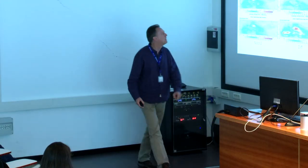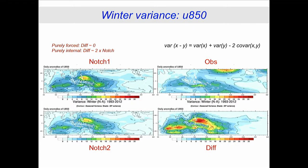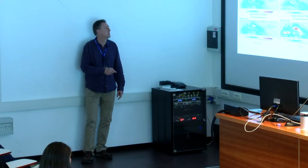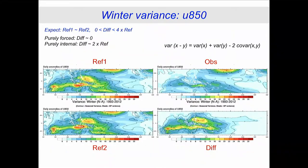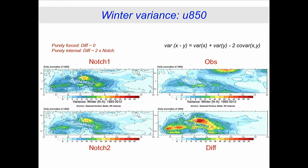The notch run has weaker variance than the reference run, implying some variance comes from boundary conditions on MJO timescales, because that's what's been removed in the notch runs. The difference between the notch twin runs is closer to twice the variance — implying the remaining variability is basically internal variability once the boundary influence is removed. The structure is quite similar to the reference run, but the magnitude has gone down by about half. All very consistent.